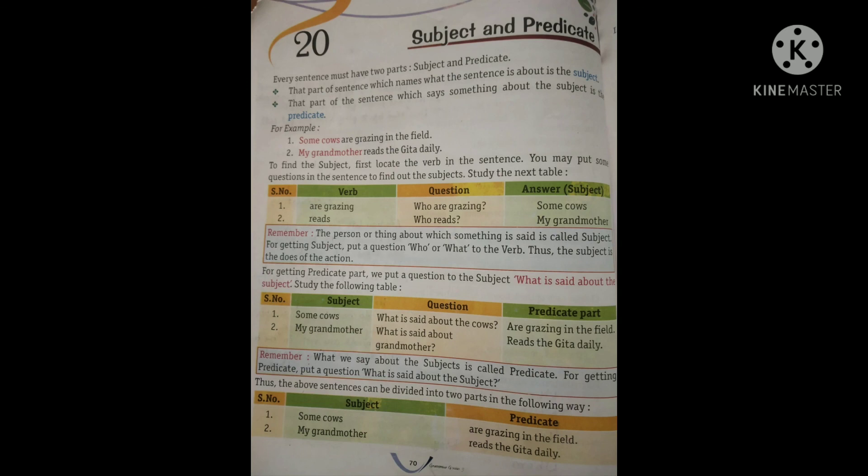Is tarike se aapke jo noun, pronoun hain, woh aapke subject hua, aur baki ka part hua aapka predicate. This is very simple chapter. I hope you all, all of you understood. Thank you.